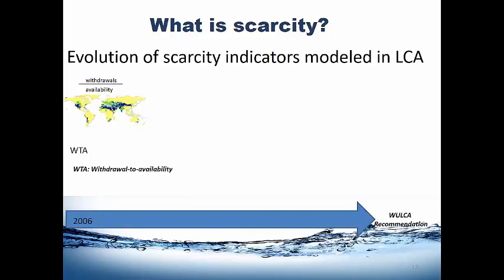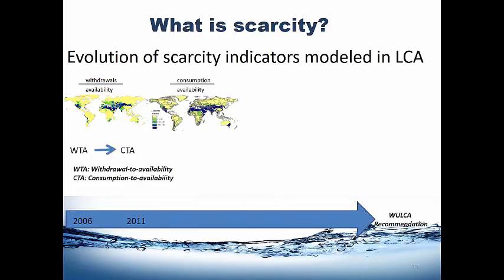Originally when we started to integrate scarcity in LCA, we used indicators based on the ratio of how much water is withdrawn in the region versus how much is available — the renewable water available. We then realized that a lot of water that is withdrawn can be put right back into the environment, for example cooling water. When you extract water and put it back, you have not contributed to local scarcity because this water is still available to local users. So ratios evolved toward a consumption-to-availability ratio, where consumption only refers to water no longer available in the watershed.